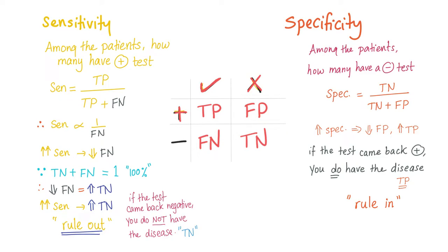So the definition of sensitivity: among the patients with the disease, how many have a positive test? Sensitivity equals true positives divided by true positives plus false negatives. Sensitivity and false negatives are inversely proportional — when sensitivity goes up, false negatives go down. Since false negatives and true negatives together equal 100%, when false negatives decrease, true negatives increase, so the total is always 1.